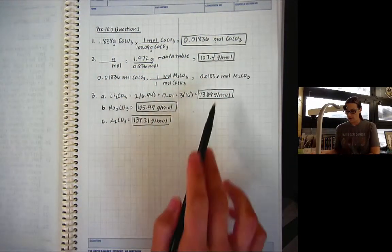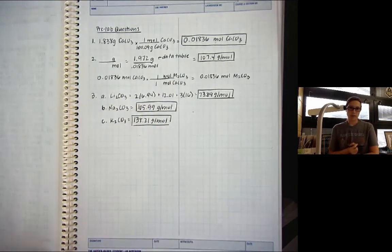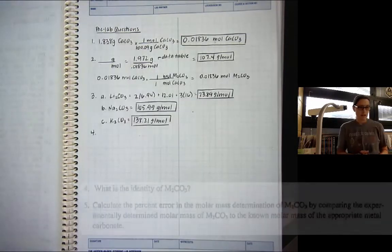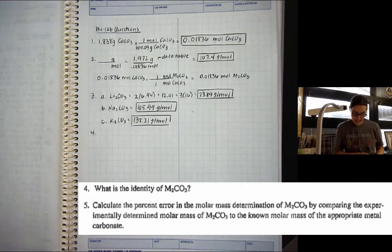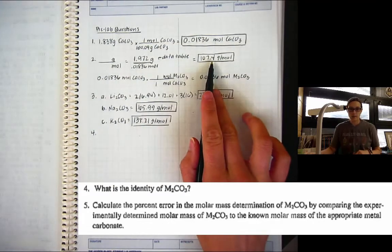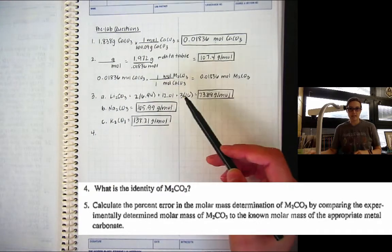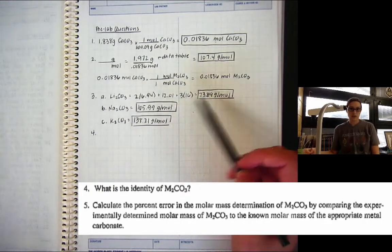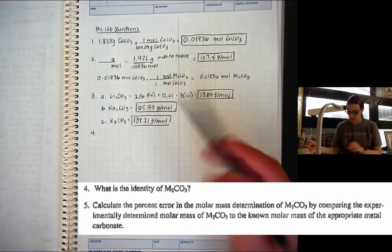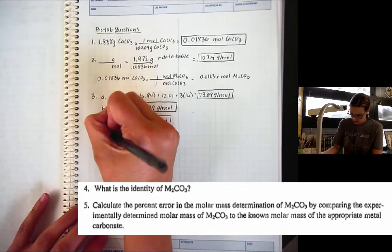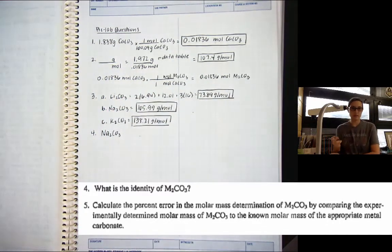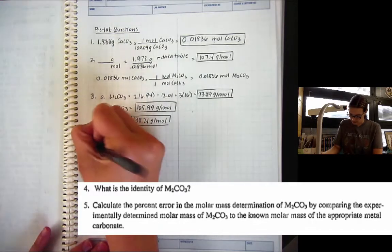So, here are your values that you should get for your molar masses. You're just adding up all of the elements from the periodic table. So the second to last pre-lab question says, What is the identity of M2CO3? So, based on this molar mass that we found from the lab data, you want to figure out which one of these molar masses is this closest to. So we should answer that the unknown is Na2CO3. Because the molar mass is the closest.